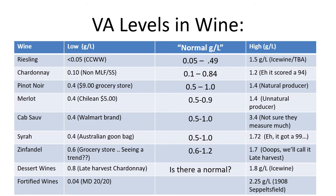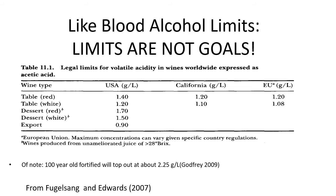The high ones are ones we've measured. The highest Riesling I've seen was 1.5 grams per liter — a Trockenbeerenauslese, a dried grape berry moldy wine. Chardonnay at 1.2 grams per liter was a high-scored wine that had some sort of stuck fermentation, was really rich, lots of oak, and dense and complex. The highest Pinot Noir I've seen was from a natural producer that probably didn't measure it. A Cab Sauv I smelled, smelled like vinegar — I measured it at 3.4 grams per liter. And we've seen Syrahs well over the legal limit.